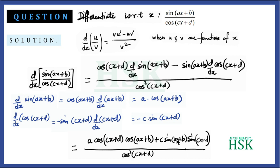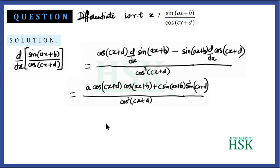This is the answer, but we need to simplify to match the textbook form. The numerator consists of two terms, so we divide each term separately by cos²(cx + d).